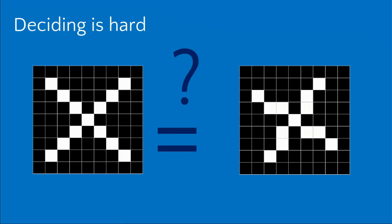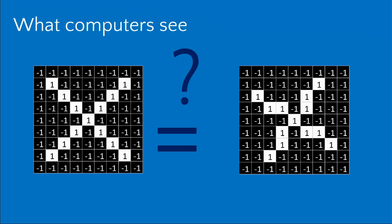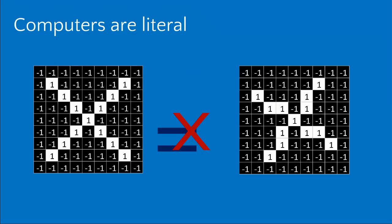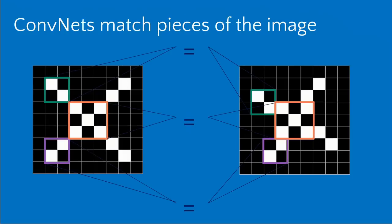When trying to decide if two images are equal, a computer goes through pixel by pixel — black pixels might be minus one, white pixels might be plus one — and compares them pixel by pixel, finding the ones that match. The red pixels are the ones that don't match. So a computer would say these are not the same. The way convolutional neural networks handle this is they match pieces of the image, shifting them around a little bit, so as long as the tiny bits still match, the overall image is considered a pretty good match.